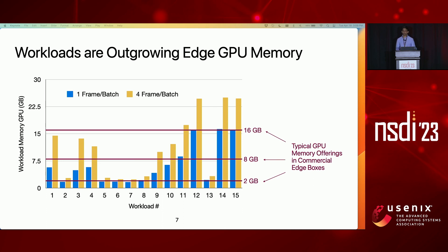However, we are finding that the total amount of GPU memory required by all of the models in these workloads is exceeding the GPU memory available at the edge. Here I plotted the total GPU memory consumption of each of our 15 different workloads with respect to the GPU memory available in today's commercial edge offerings. The two different colors correspond to different batch sizes, and operators typically use larger batch sizes to process more frames at once and decrease inference latency. Not only do many of these workloads currently exceed available GPU memory, this limitation is only going to get worse as workloads grow with more camera feeds, more queries, and larger and more complex models. Scaling GPU memory at the edge is challenging due to the physical constraints of the edge environment.